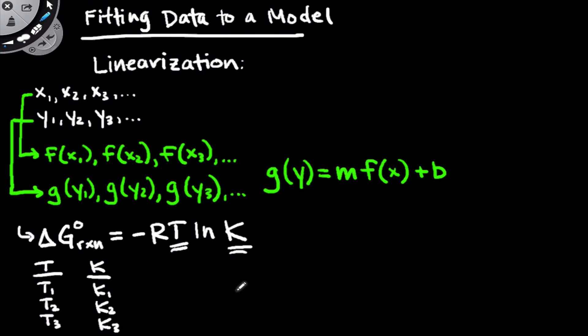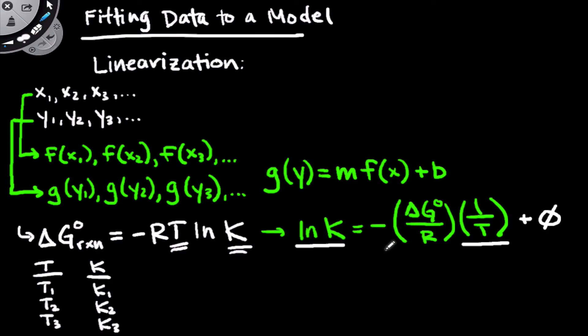Notice that if we divide both sides by negative rt and just flip the equation to put the natural log of k on the left-hand side, we get the natural log of k is equal to, and I'm going to shuffle the symbols around a little bit, negative delta G over r times 1 over t. And now we have a function in k that is linearly related to a function in t, where the y-intercept is simply 0, and the slope is negative delta G over r.